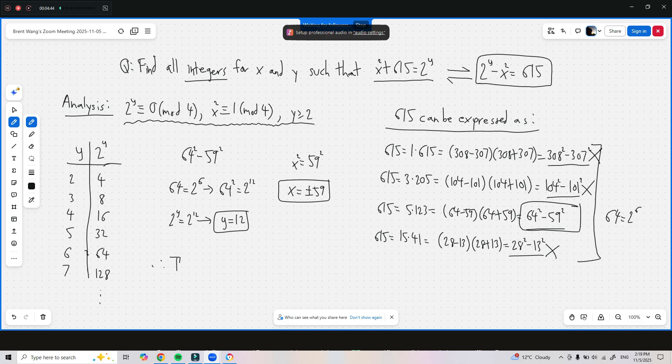Therefore, the only solutions to the equation x squared plus 615 equals 2 to the power of y are x equals negative 59 and y equals 12, and x equals 59 and y equals 12.